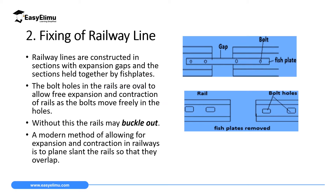Another application of contraction and expansion in solids is in the fixing of railway lines. Railway lines are constructed in sections with an expansion gap. Through this expansion gap, from rail 1 to rail 2, a fish plate is used to connect the two rails. This fish plate is a small belt of metal which has bolts, and the bolt holes are oval in shape to ensure that the bolts can move freely whenever there is expansion or contraction in the rails.